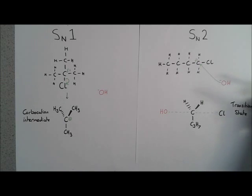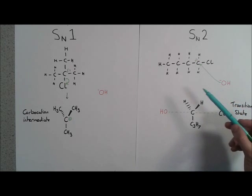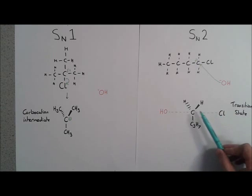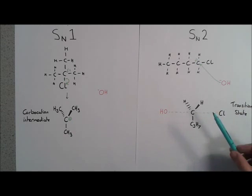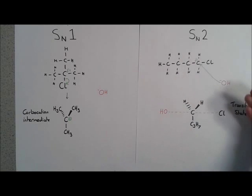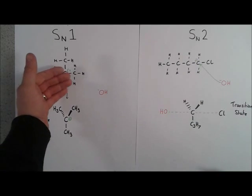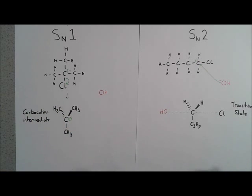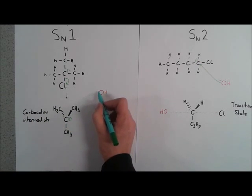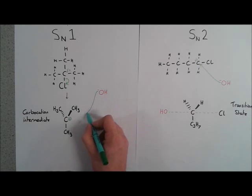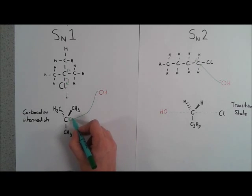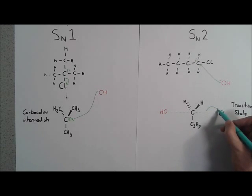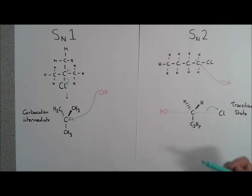In SN2 we've got a trigonal bipyramidal shape where the OH is attacking as the Cl is leaving. As a result we have these semi-bonds, and it's referred to as a transition state because it isn't ever a stable point—it's turning into the product. At this point the OH- joins in, there is now enough space to attack the carbon, and this chlorine officially breaks off.